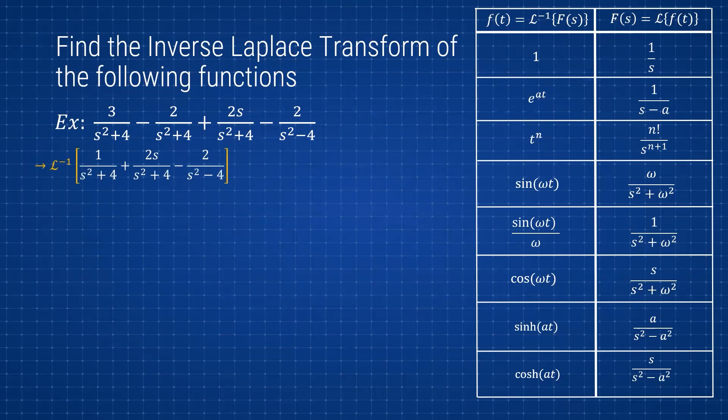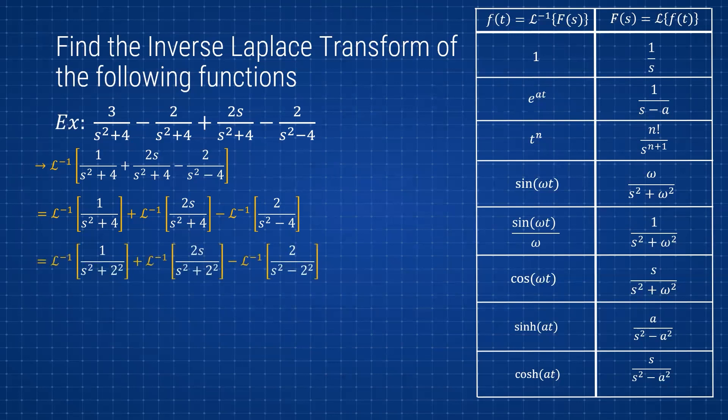The second term also has the same denominator, but since we need to take the inverse Laplace of each part separately, it's not convenient to combine those. The last term has a different denominator so we cannot combine it. So we're taking the inverse Laplace of: 1/(s²+4) plus 2s/(s²+4) minus 2/(s²−4). We can factor out — noticing that 4 is simply 2² — which makes it easier to identify which inverse Laplace forms to use.